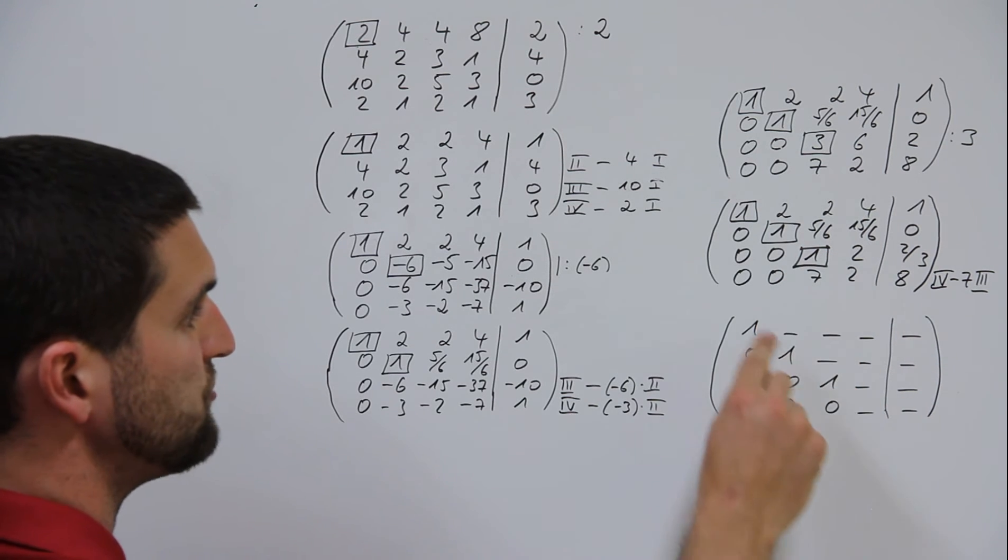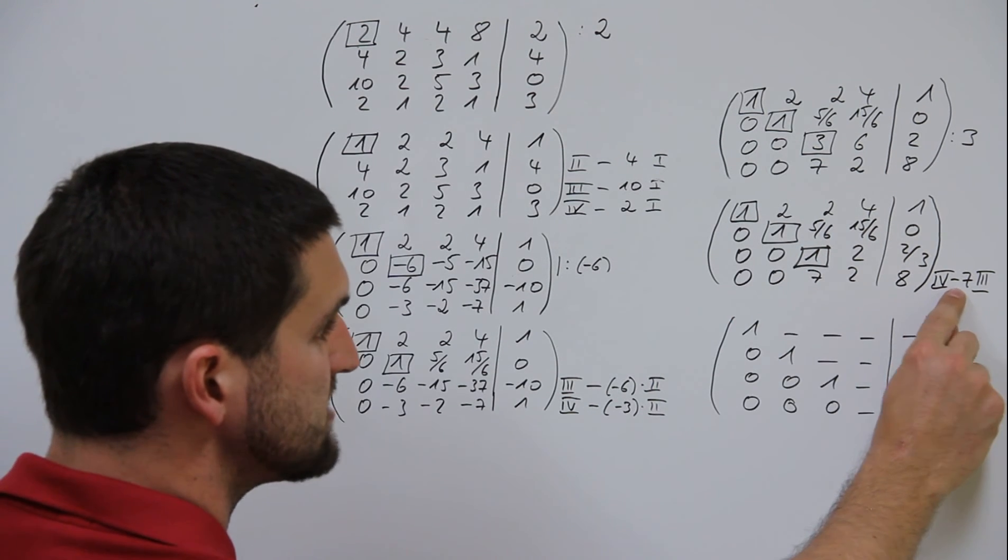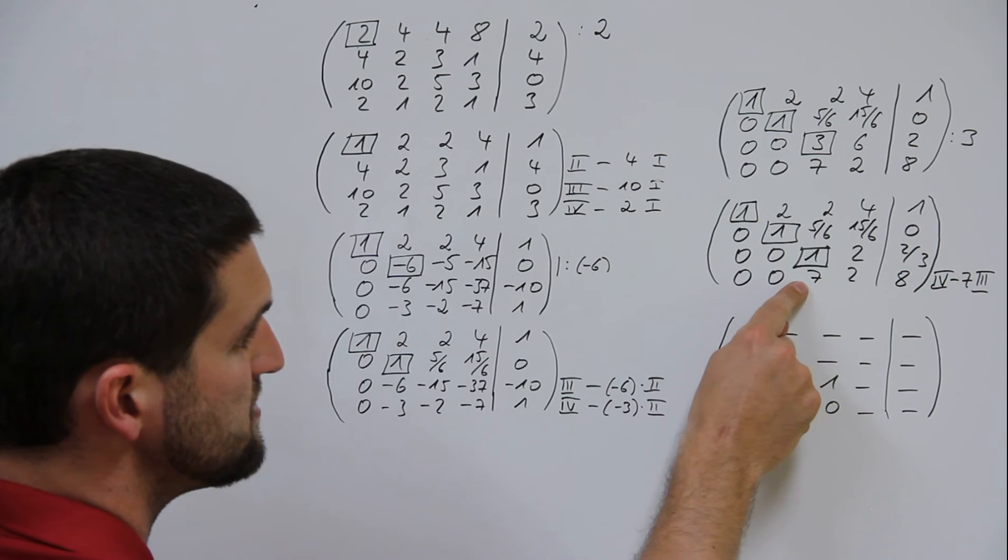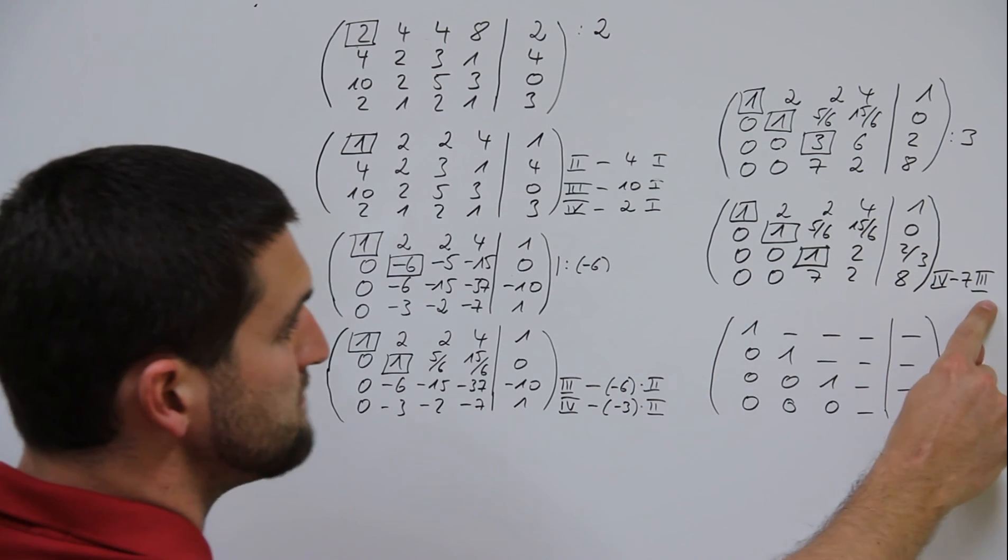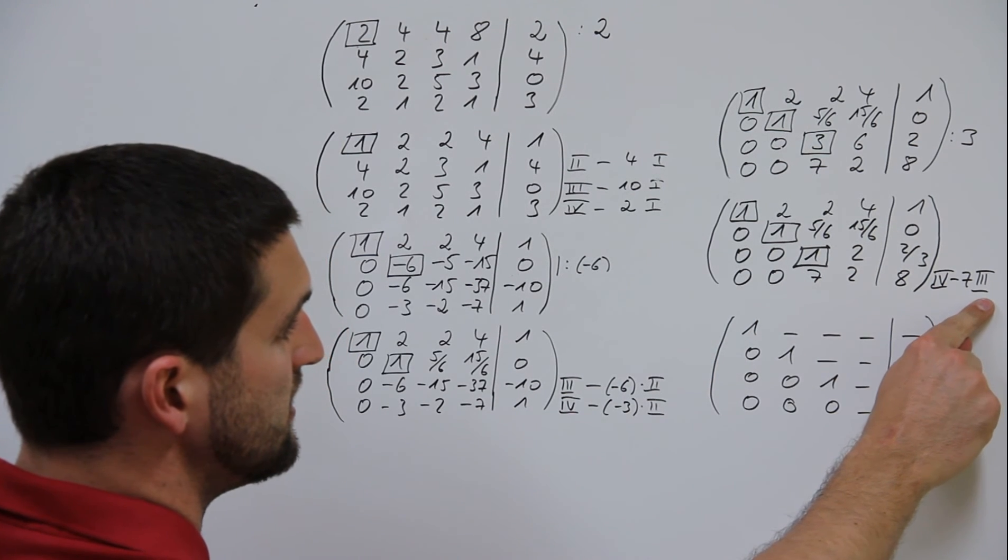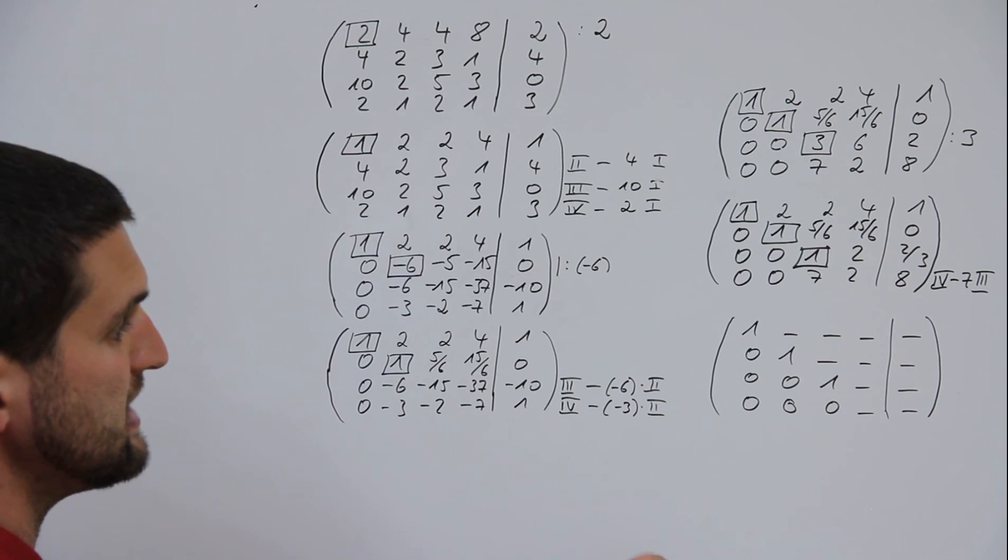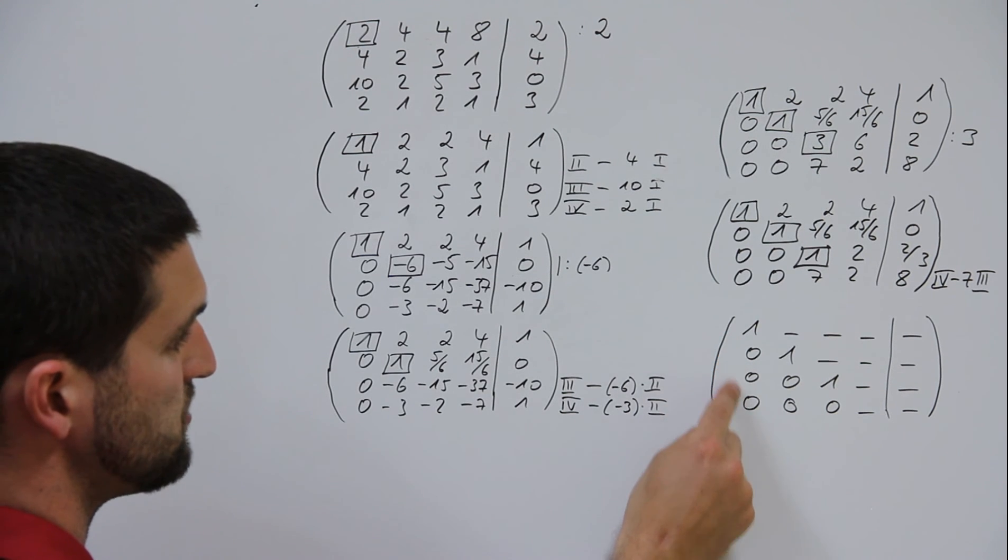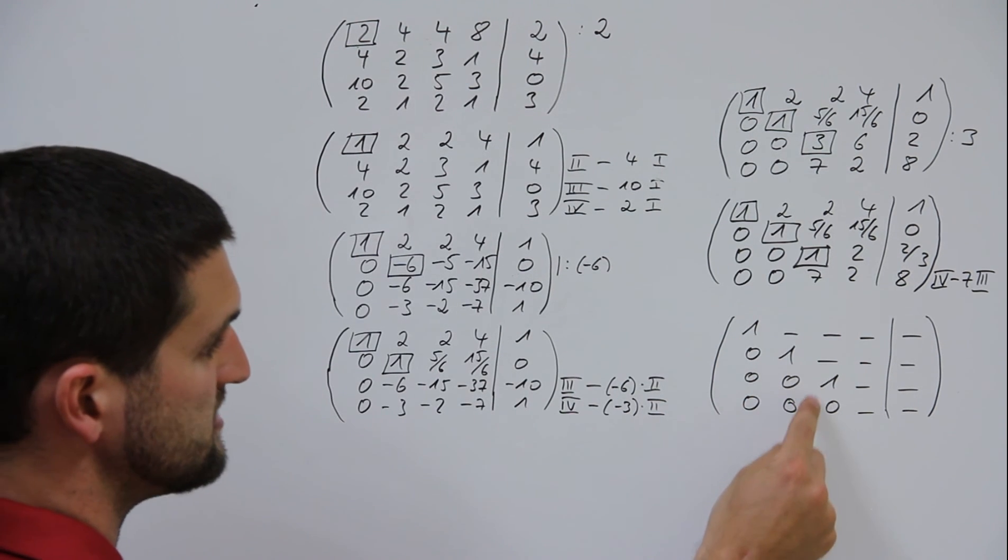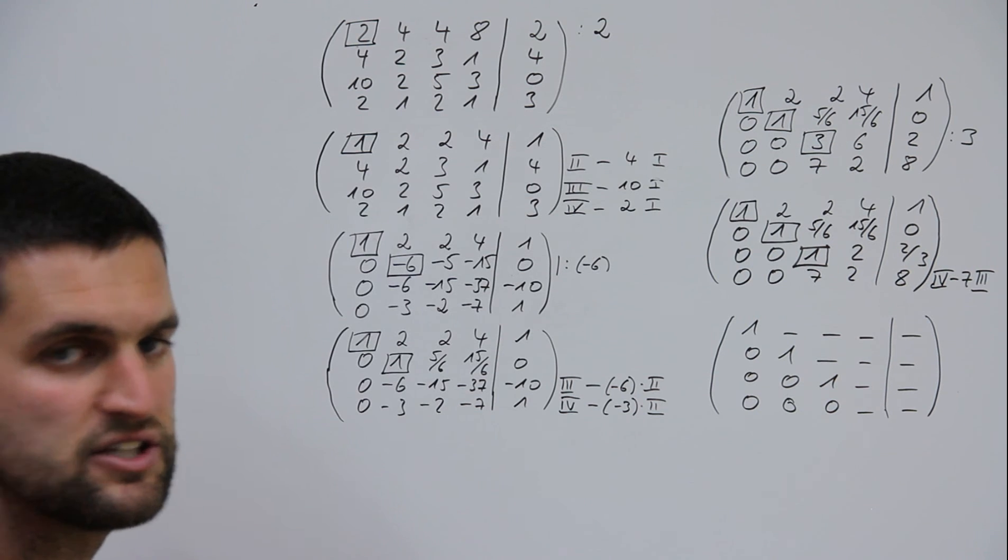Last step you have to do is line 4 minus again whatever stands here under the new pivot element times 3. Put it down in the calculator and you have the form 1 0 0 0, 0 1 0 0, 0 0 1 0 and whatever stands here. It's easy to solve.